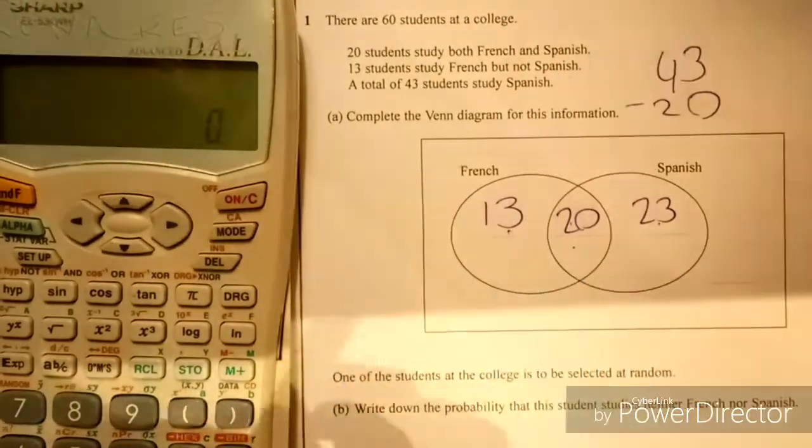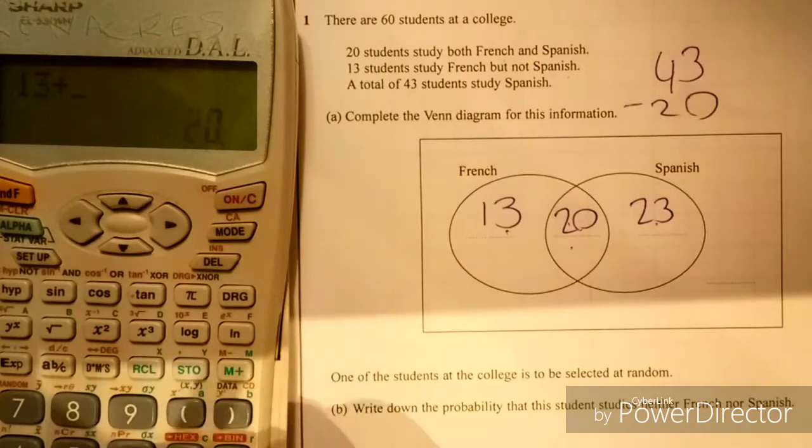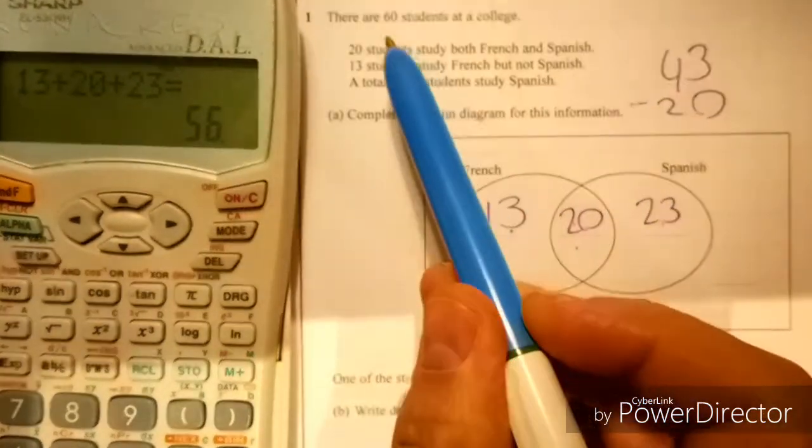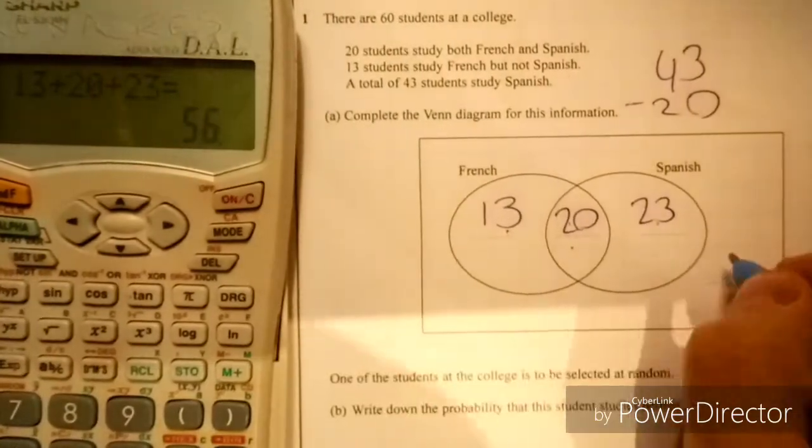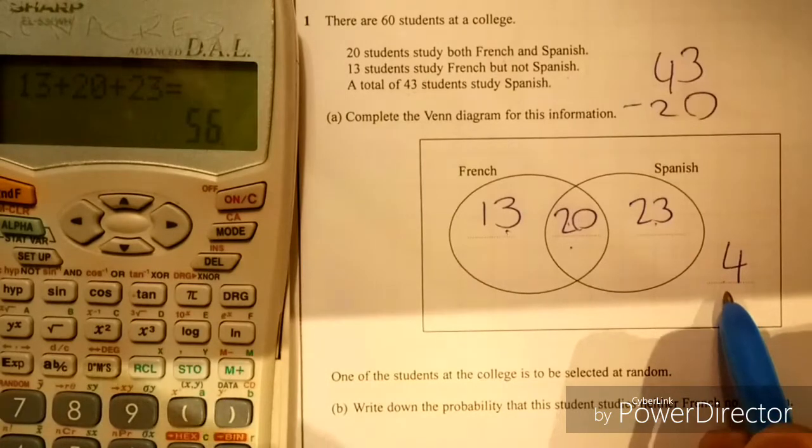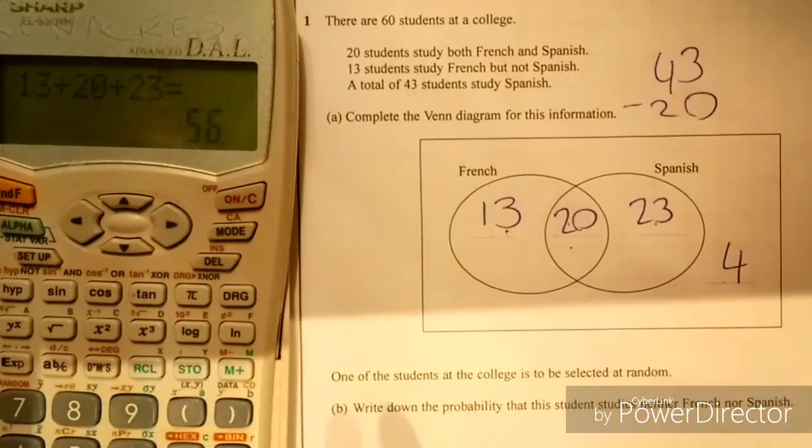Now the question is, if I add all of these up, I should get the total. So do 13 plus 20 plus 23, I get 56. Now that says 60 there, which means there's four that I'm not accounting for, and that's why I need to put 4 there on the outside of the Venn diagram. People tend to forget about that.